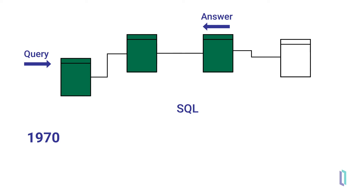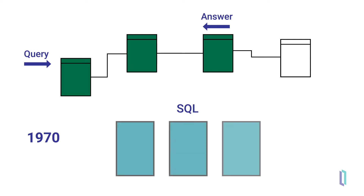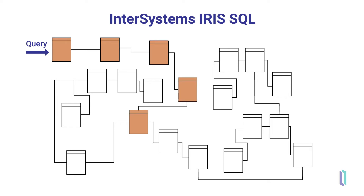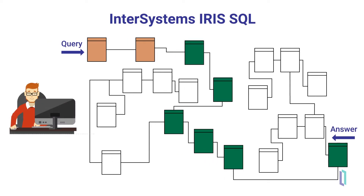SQL refers to two dimensions: columns and rows. Because SQL was designed to handle two-dimensional tabular data, the terms column and row have meaning in SQL syntax. InterSystems' IRIS SQL is fast and can quickly get results, even from multiple tables. However, the SQL developer needs to create the right indices, tune the tables, and craft the SQL queries in a way that will generate the fastest query plan.